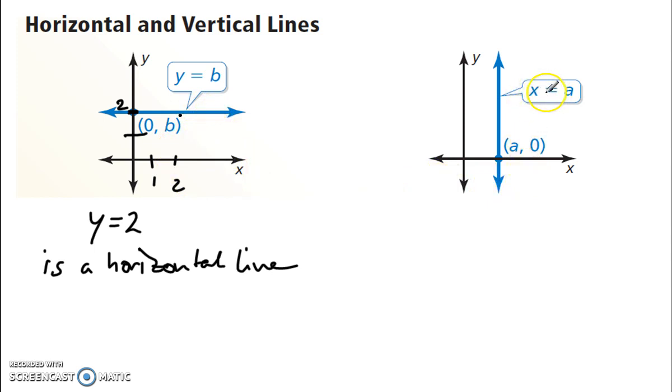And then, on the other hand, if I have x equals a number, for example, x equals 1. There's 1, there's 2. No matter what y is, 1, 2, x is always 1. When y is 1, x is 1. When y is 2, x is 2 because x equals 2. That is a vertical line.